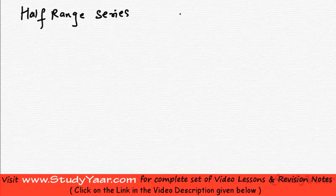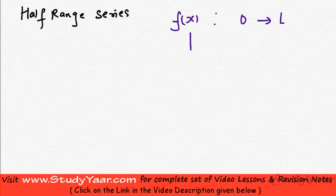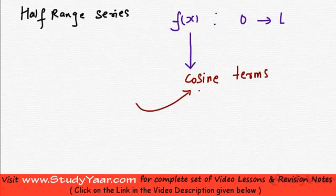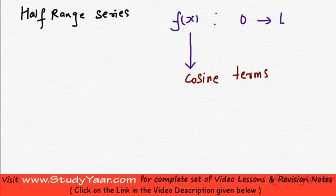Let's suppose I have a function f of x, which is defined in an interval 0 to l. What I want is to get an equivalent series which gives me the value of this function at each point between 0 and l, and which contains only cosine terms. So I am looking for an infinite series of cosine terms that is equivalent to this function between 0 to l. Let us see how we are going to find that series.